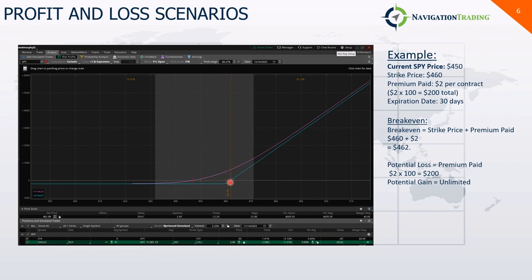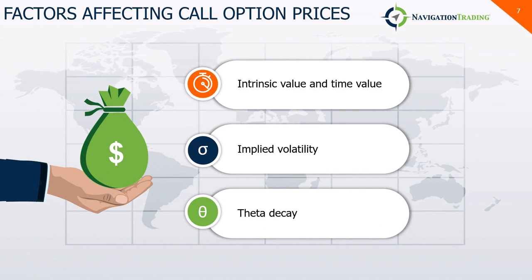The teal line represents your profit and loss over time at contract expiration on 12/16/2023. Your potential loss is equal to the premium paid: $2 times 100 shares equals $200 total. However, your potential gain — shown by the teal line going up and to the right — is unlimited, growing by the thousands as the strike price goes up. At 500 you'd be making about $3,700.